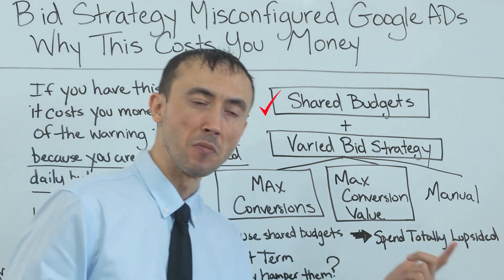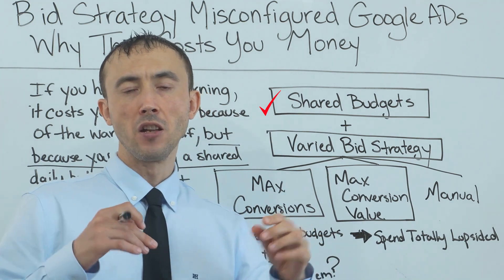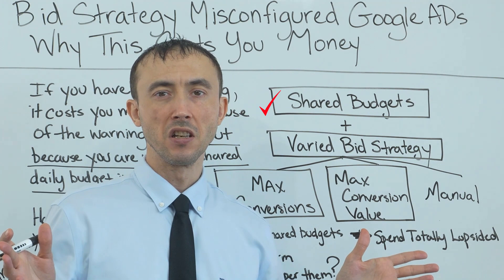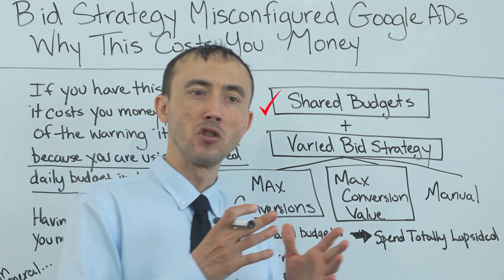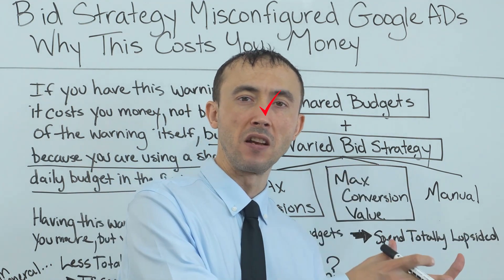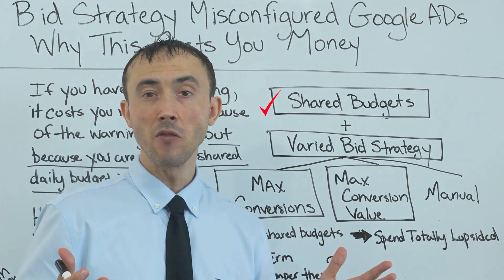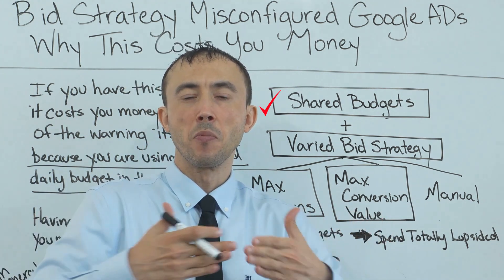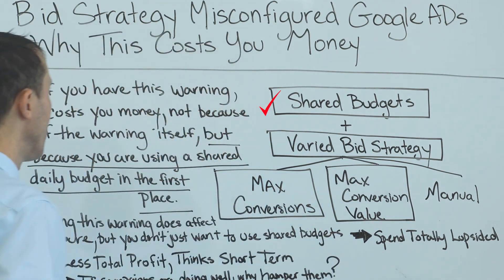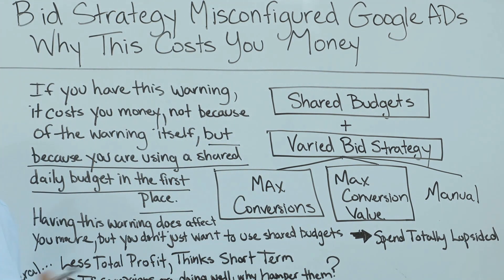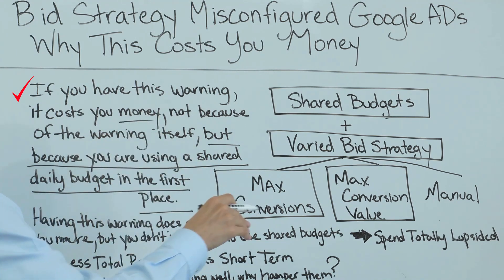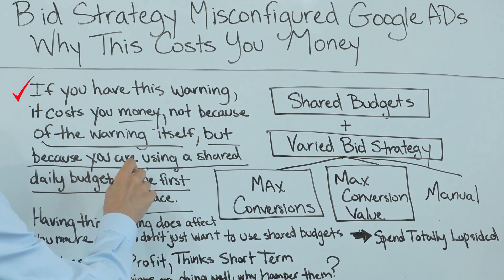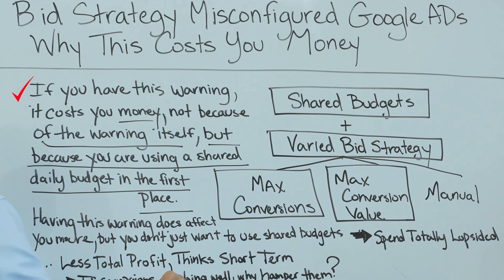Because it confuses the system. When you use shared budgets, the system is trying to figure out how to distribute that budget over the campaigns. It's trying to pick favorites and send more of the budget to certain campaigns than others. And it can't decide well if you have different bidding strategies, because it doesn't understand how to properly cross-compare the performance of the different campaigns. If you have this warning, it costs you money — not because of the warning itself, but because you are using a shared daily budget in the first place.